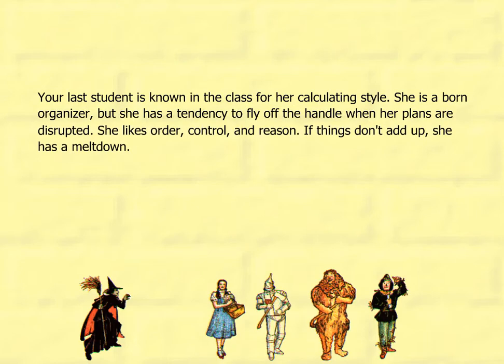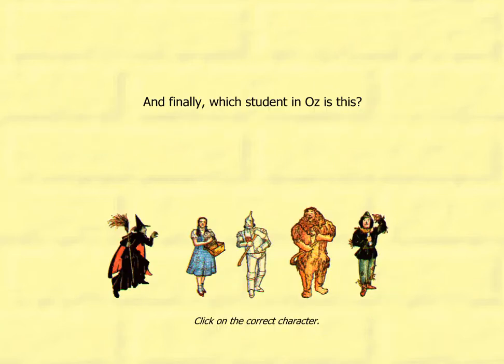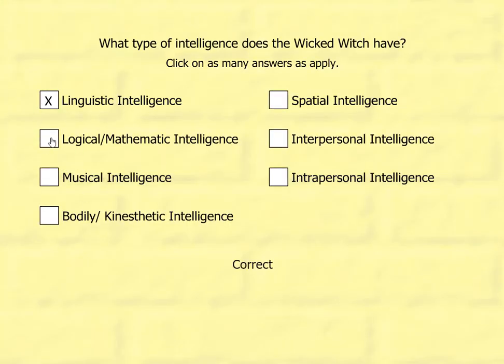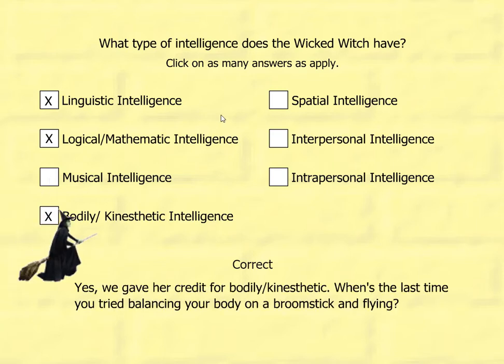Your last student is known in the class for her calculating style. She is a born organizer, but she has a tendency to fly off the handle when her plans are disrupted. She likes order, control, and reason. If things don't add up, she has a meltdown. It's the Wicked Witch! The Wicked Witch has linguistic intelligence, logical or mathematical intelligence, bodily or kinesthetic intelligence, and spatial intelligence.